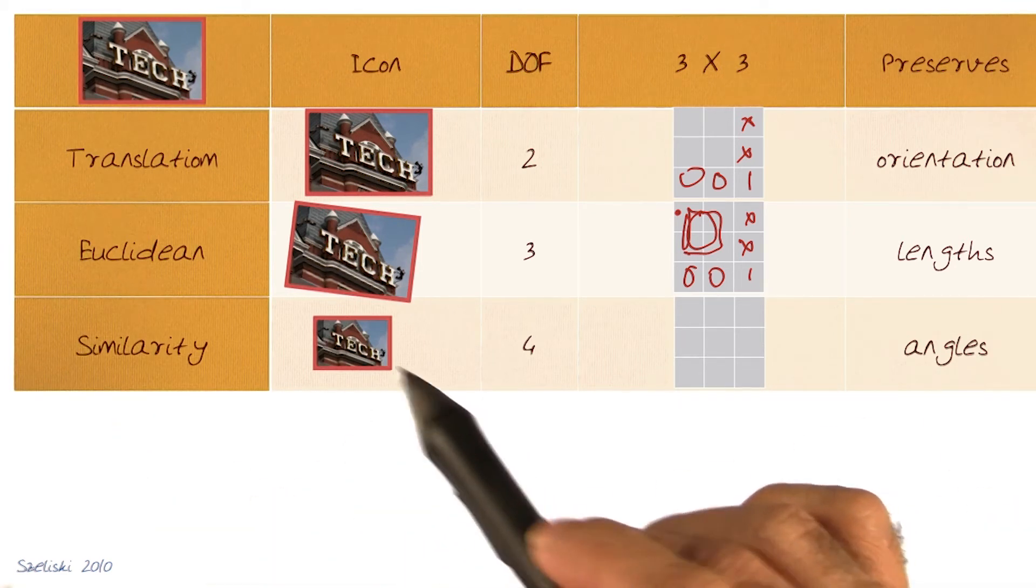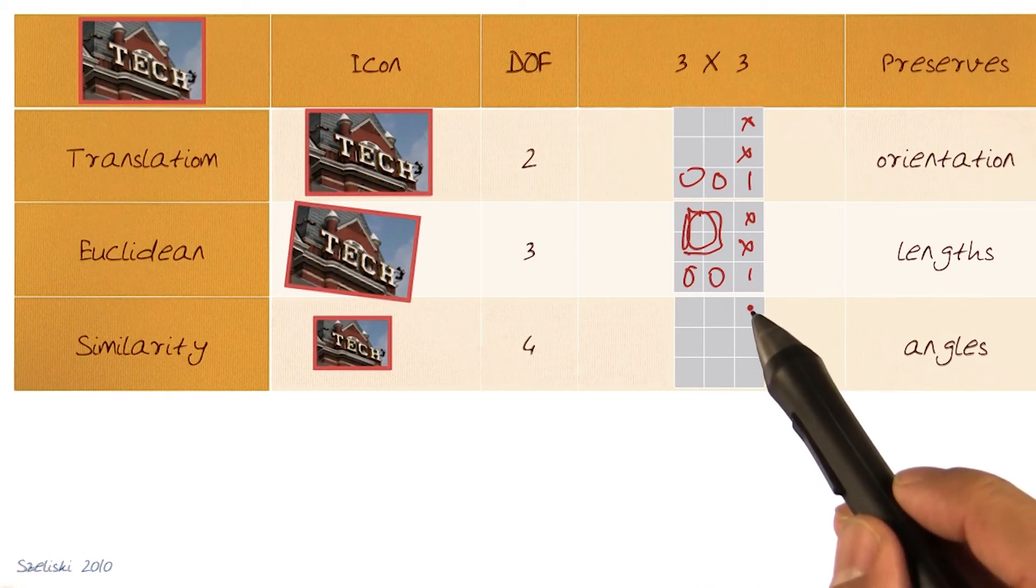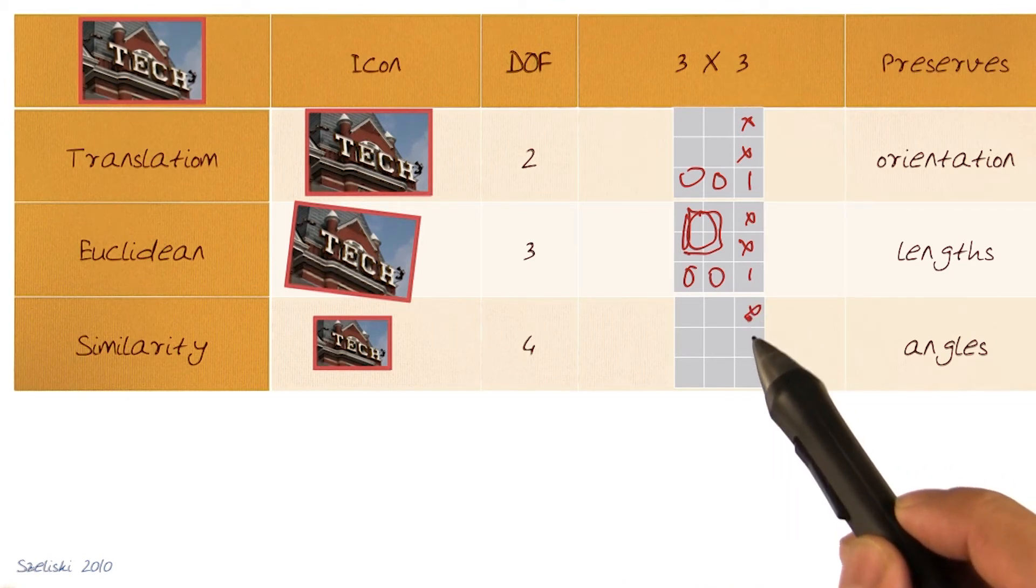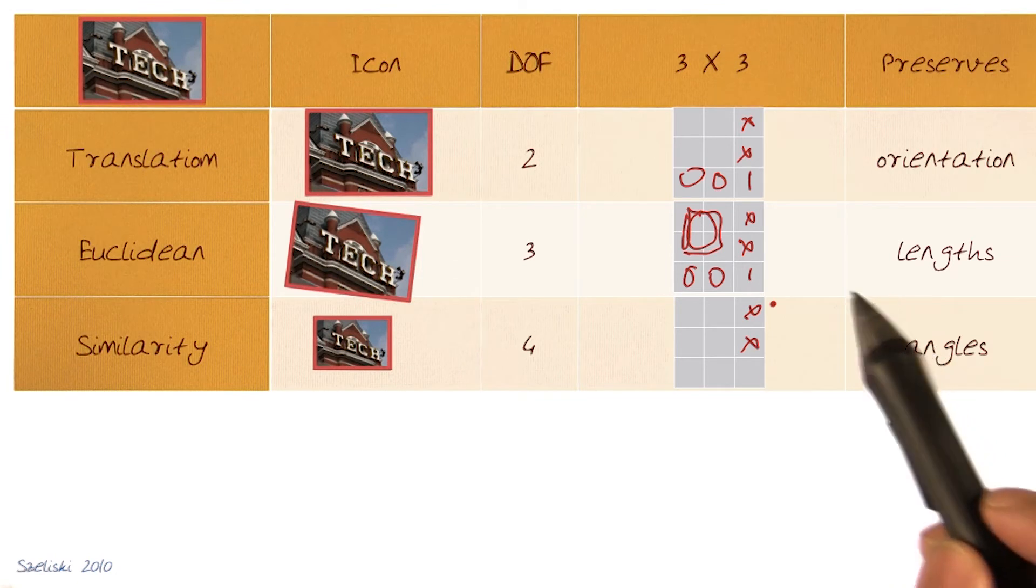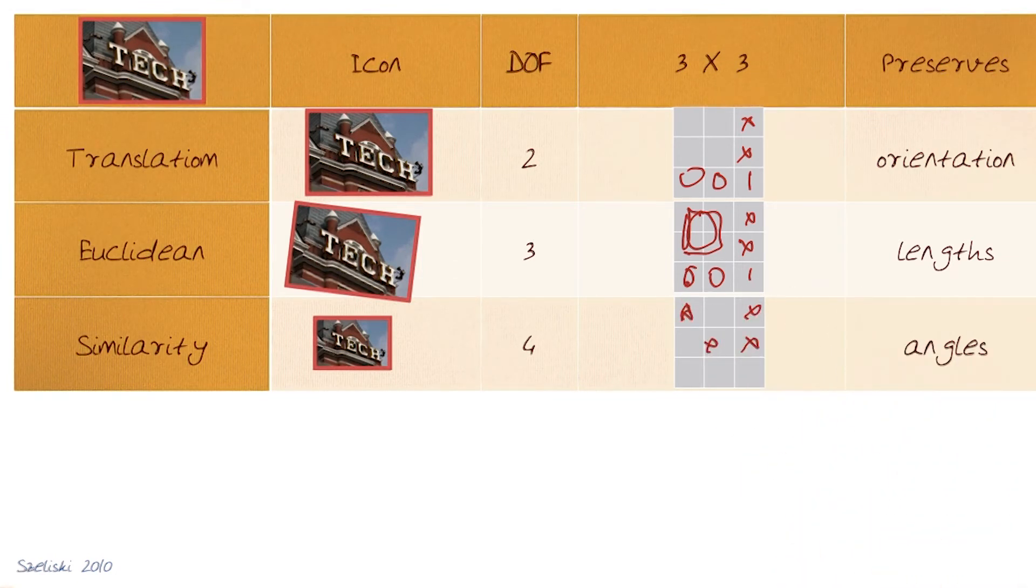Third case similarity, where now we have scaled things up, four degrees of freedom. What that means is now we have the two parameters for translation, assuming there's translation going on. And scale parameters would be here, and the rest would be the same.